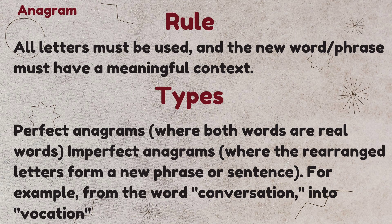There are two types of anagram: perfect anagram and imperfect anagram. A perfect anagram is when both words are real words with proper meaning. For example, 'tablet' and 'battle' are both meaningful words in the dictionary, so they form a perfect anagram.